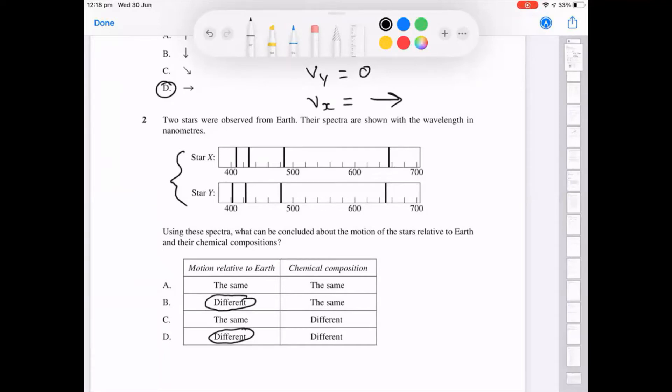For the second component where we're looking at the chemical composition, since all the bands have been shifted by the same amount, we can just compare the bands and see that they're actually the same. So they've got the same fingerprint region for the stars. Therefore it's the same chemical composition, giving us answer 2b.